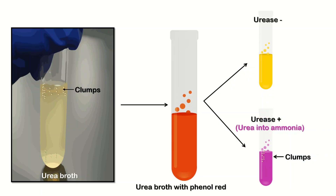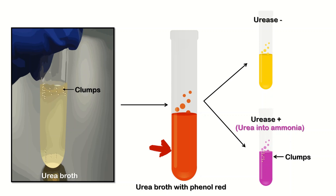Procedure of urease test: we take urea broth and add phenol red into it. Then we add the bacteria. If the bacteria has urease enzyme, it will convert the urea present into ammonia and turn the red color to pink, with clumps formed. A pink test tube confirms urease-positive bacteria. If no pink color forms, it is urease negative.